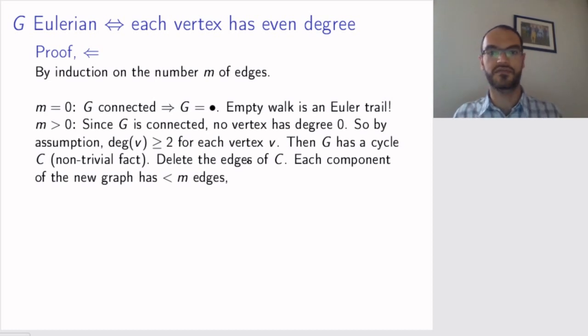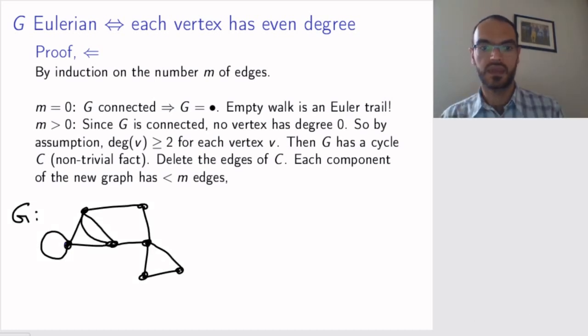Delete the edges of this cycle. Then each component of the new graph will have fewer edges. So let's look at an example. Assume that the graph looks like this. So I have my graph where all degrees are even and at least two. And then I know that there exists a cycle and I delete the edges of this cycle. So maybe I'm looking at the cycle consisting of this part. And I remove the edges of this cycle.